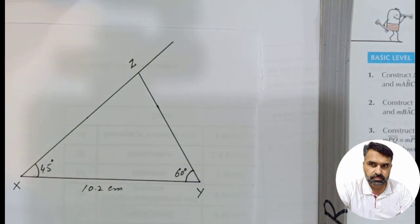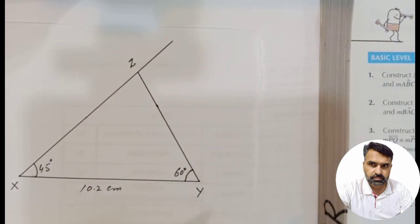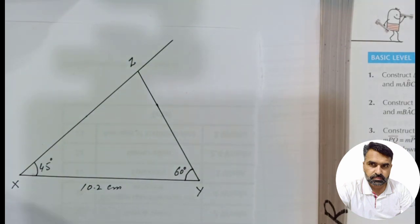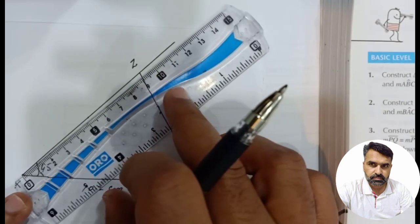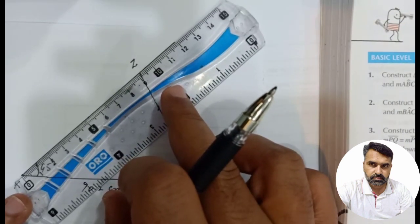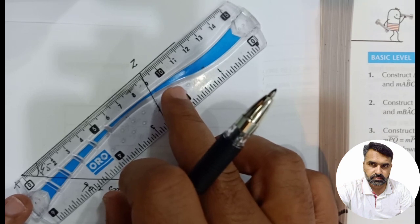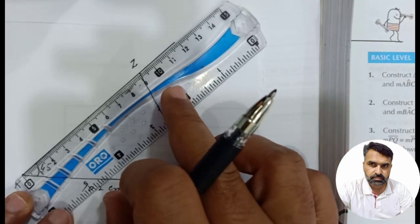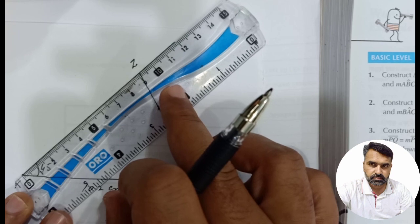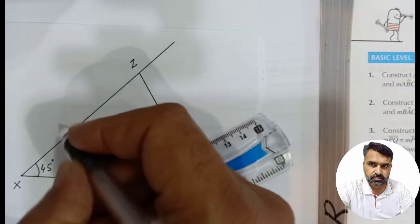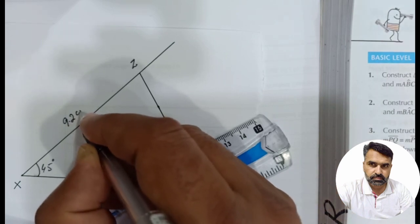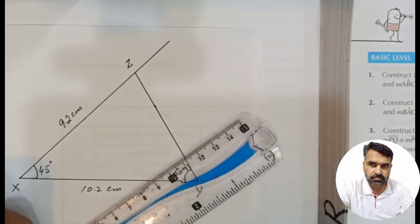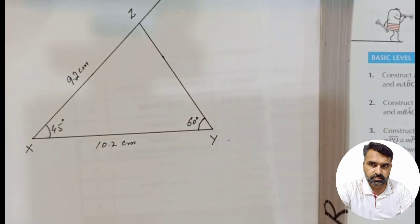Students, now we measure XZ using the scale. This is X and this is Z. The value is approximately 9.2 cm. According to me, the length of XZ is 9.2 cm.